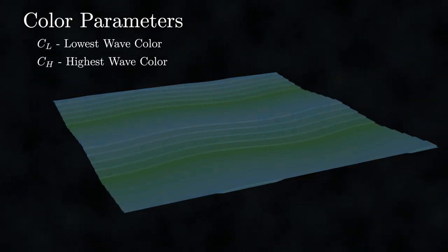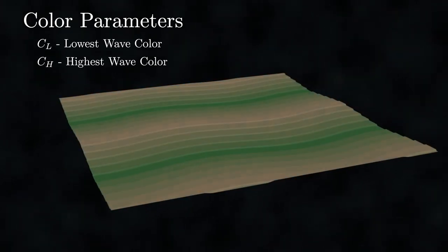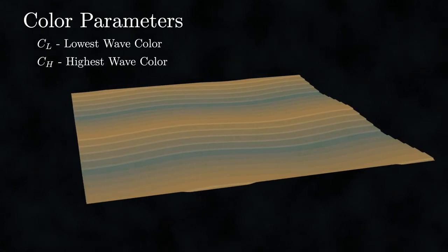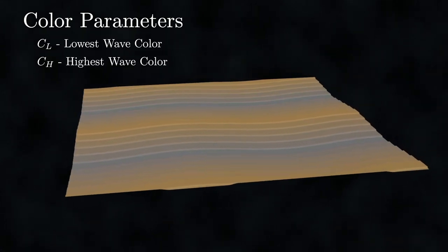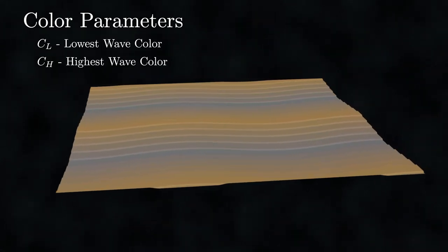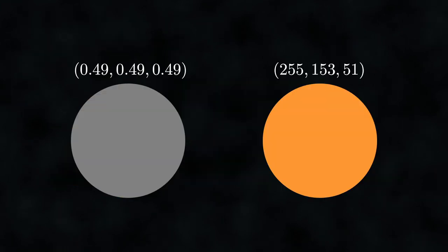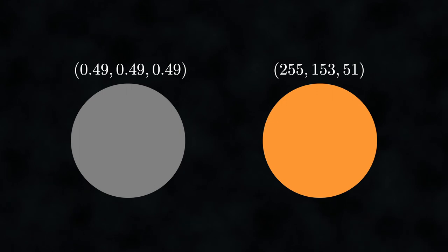Let's examine some of the parameters of the procedure we'll be creating. Parameters CL and CH should represent colors — but what exactly does that mean? How do we describe color mathematically? Do we want the user to provide a real vector of three values between 0 and 1, or a vector of three natural numbers between 0 and 255? In this section we'll develop the tools to answer these questions with precision.